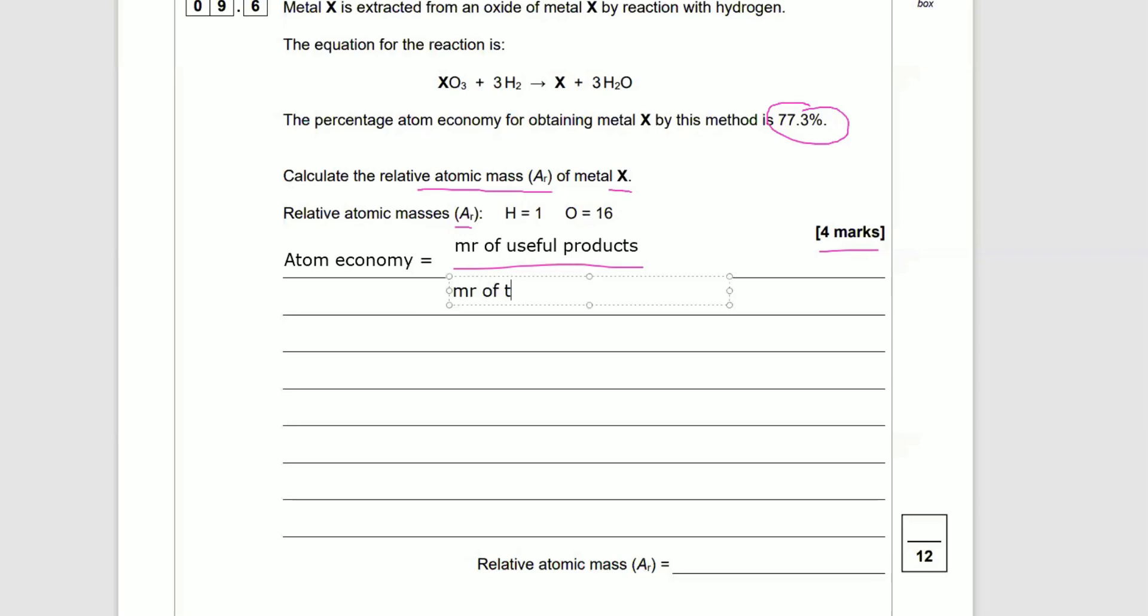...total Mr of products, and then we're going to times 100. Now we know that we've got the answer, it's 77.3, so we're going to start setting this out and working it out.